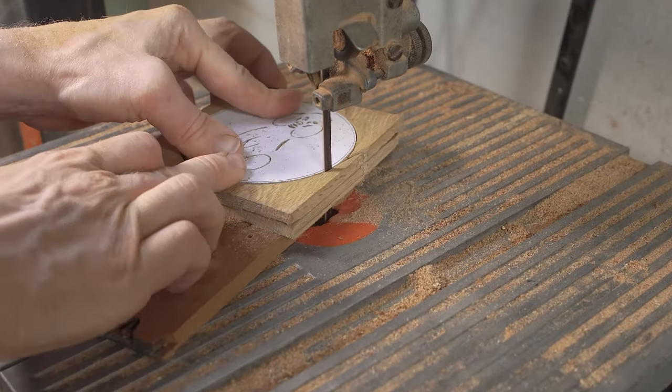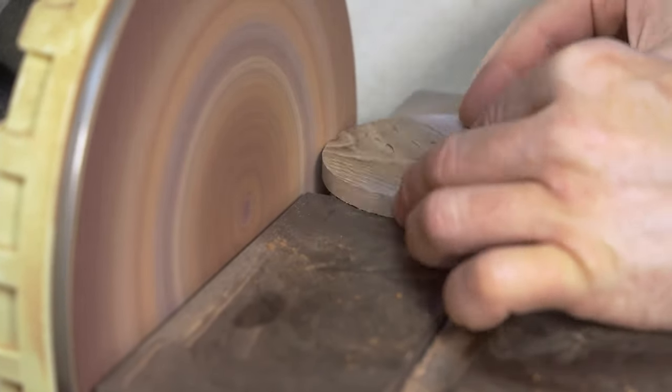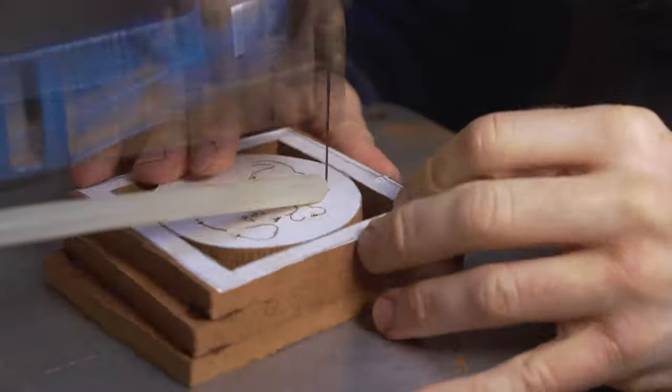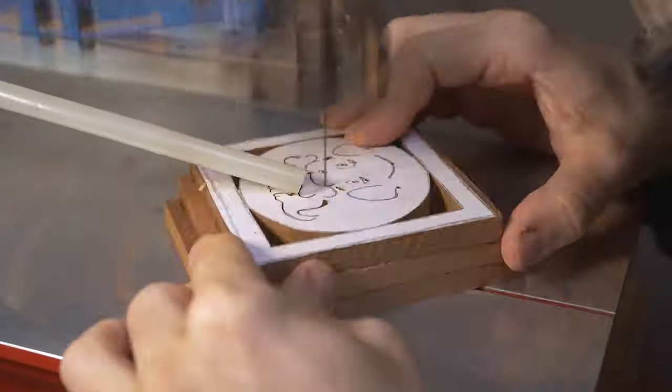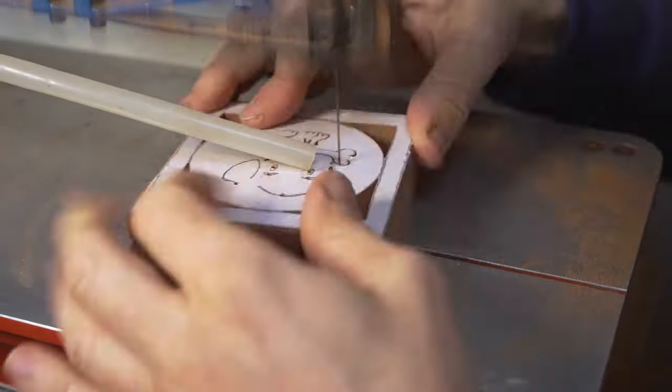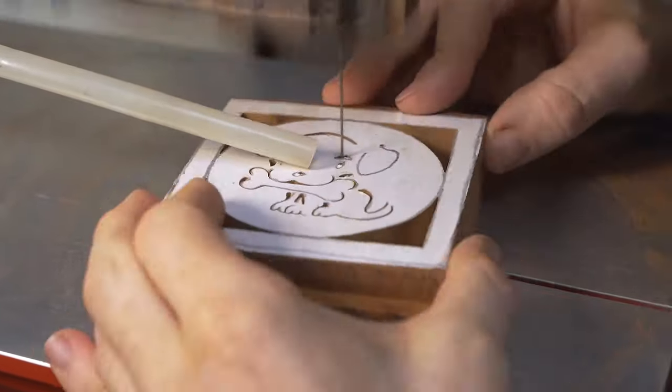The next design that we have chosen after our poodle is another dog design but it's a more cartoon style dog with a bone in its mouth. It's that same process. Feed the blade into the hole that we're going to use to then do that pierce work and the line art.